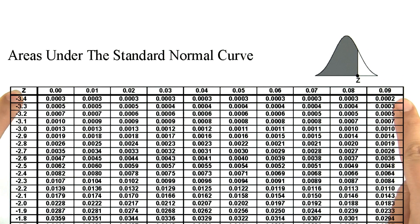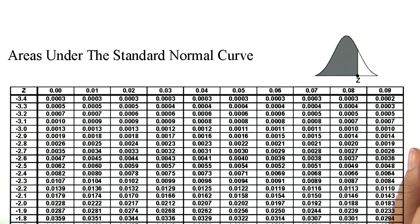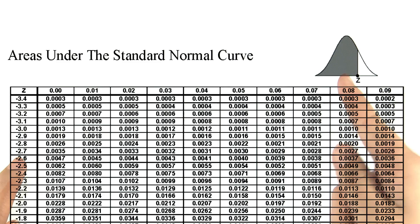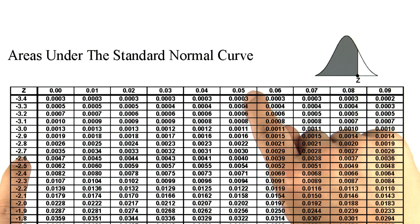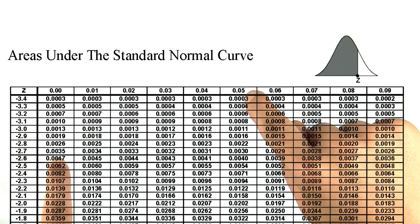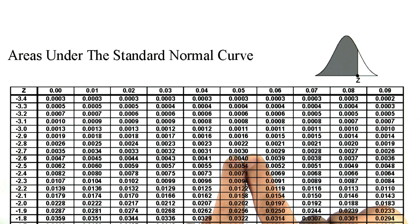So if we have a z score of, say, negative 2.75 — remember that would be less than the mean — negative 2.7 is here, and 0.05 is here. So if we follow over, these cells meet at 0.003.